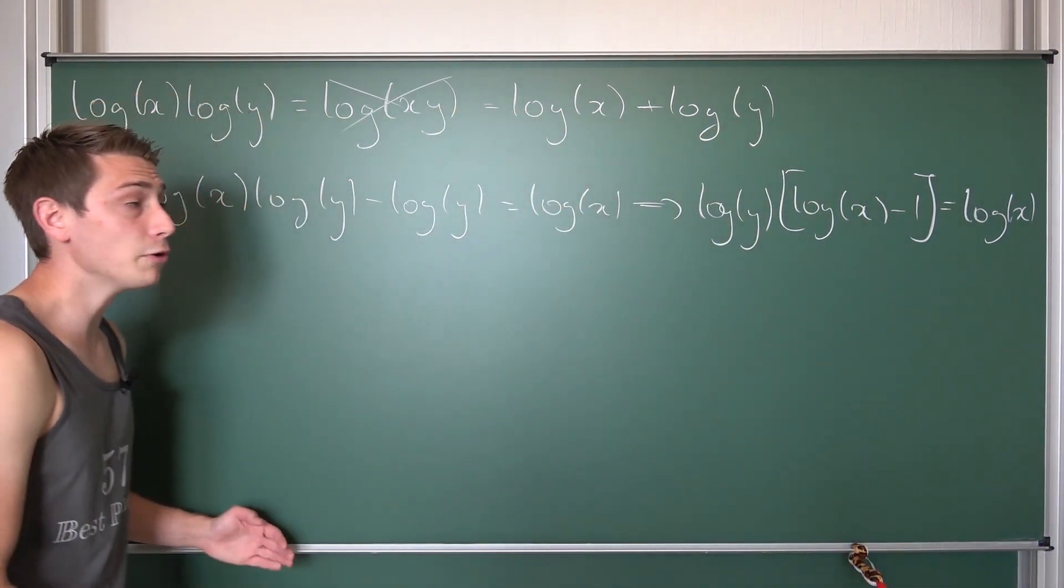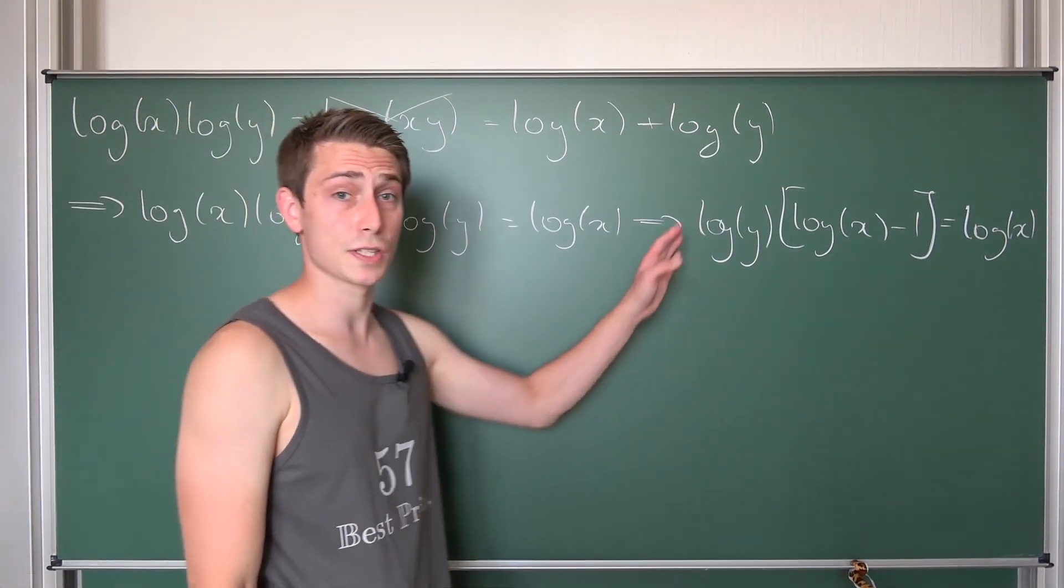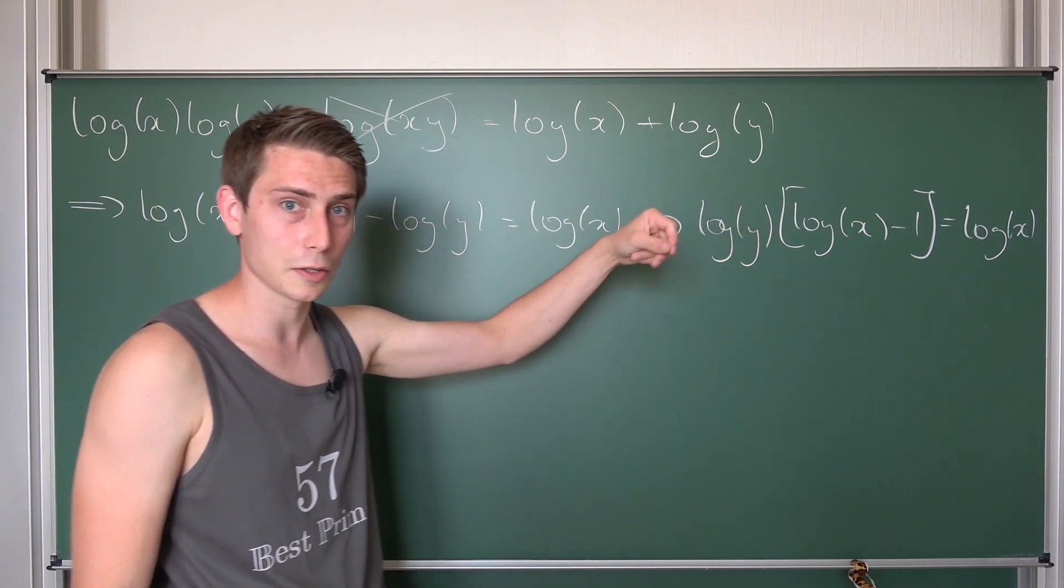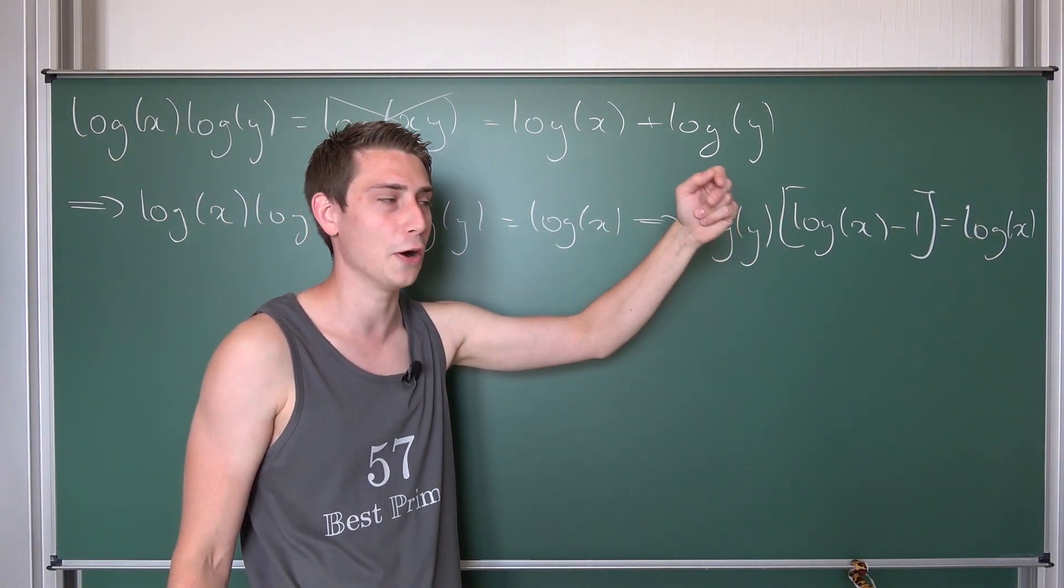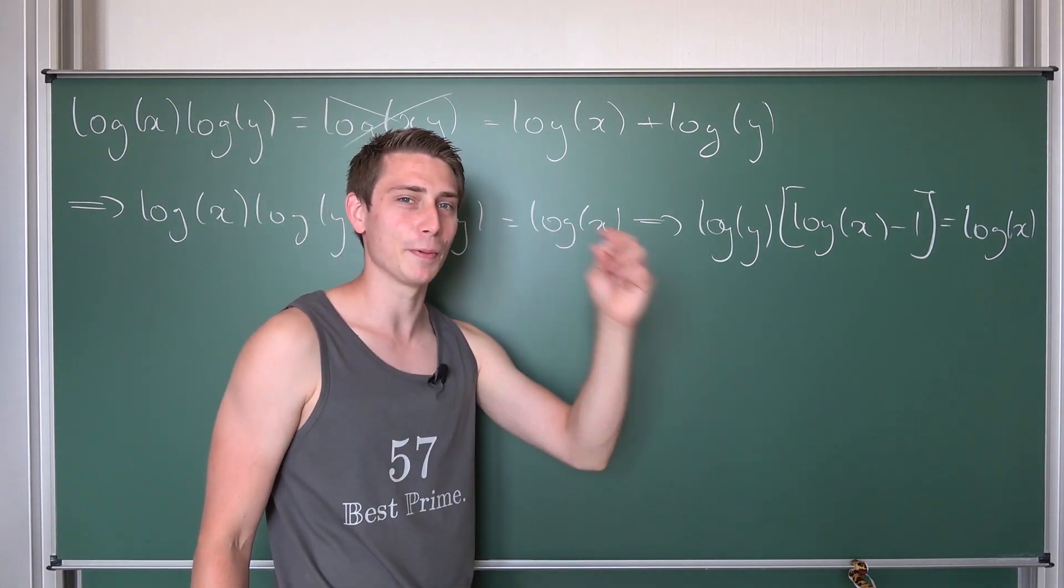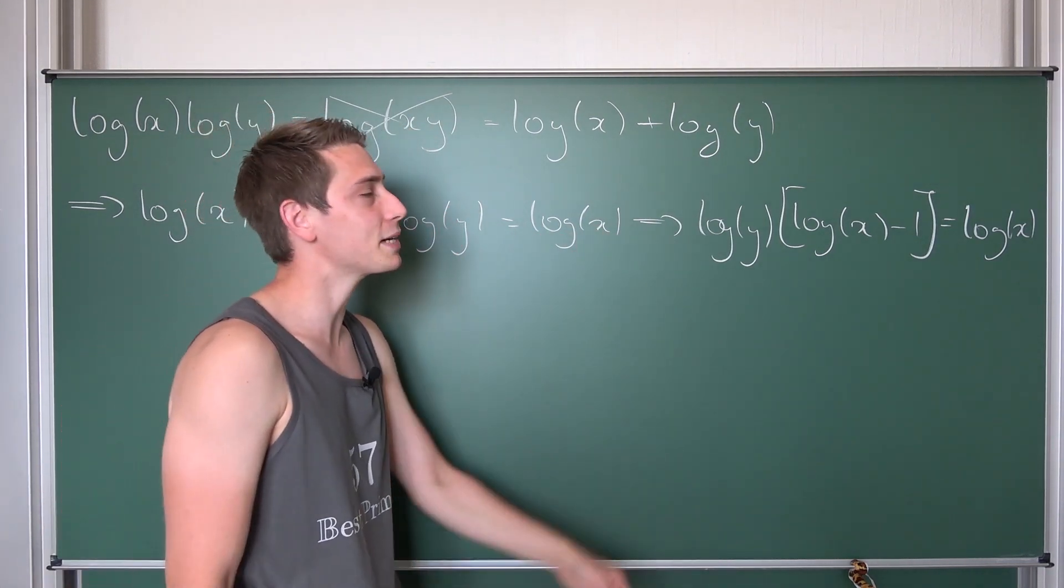Meaning we can actually factor it out, leaving us with log of y times log of x minus 1 being equal to the log of x. Cool thing. Now you could go ahead and exponentiate both sides and play around with the expression a little bit more just like you would play around with your girlfriend at home. Good old fappable maths reference here. That was my name back then.